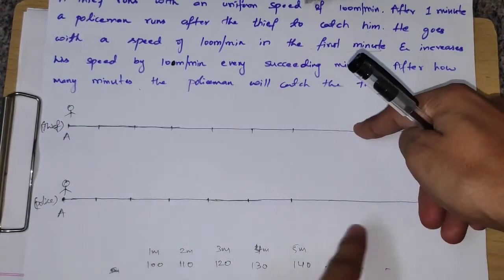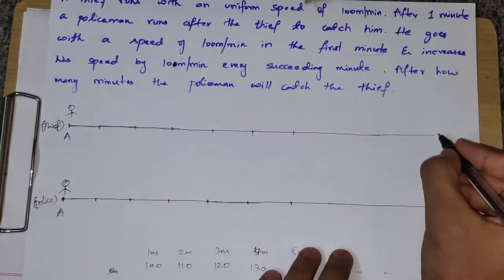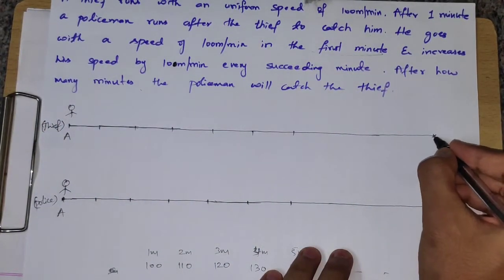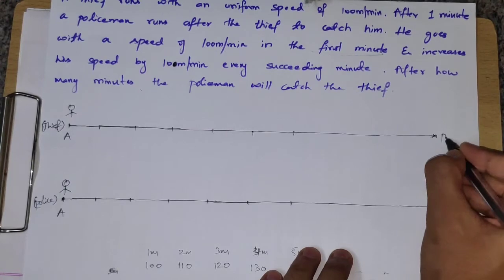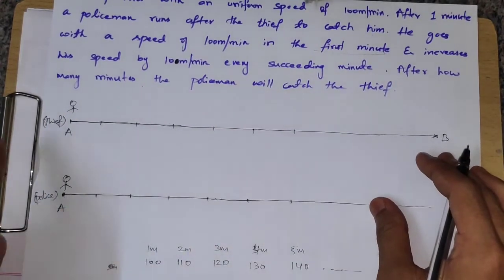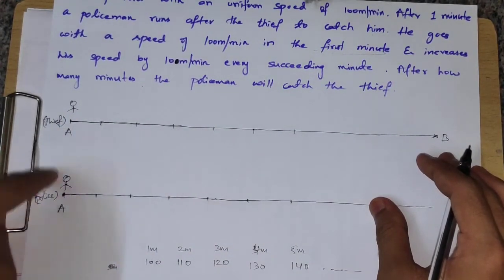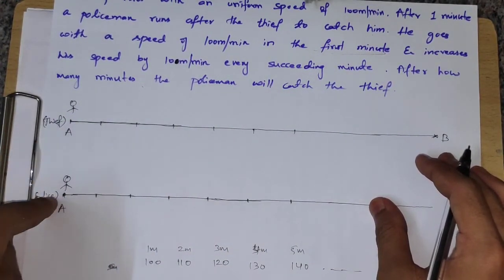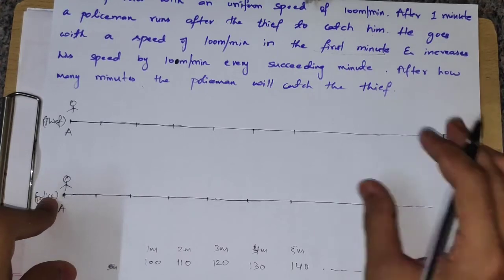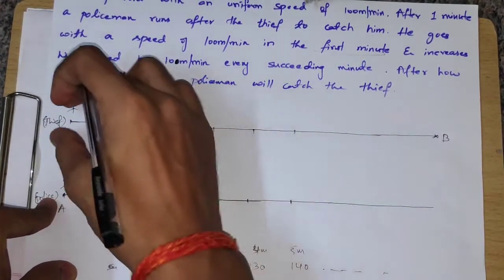The police will meet the thief at point B. Let's figure out the diagram — the thief and the police both start from the same point, and the thief will travel ahead. This will cover 100 meters in the first minute.